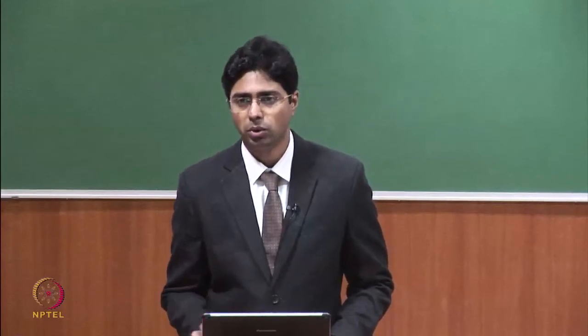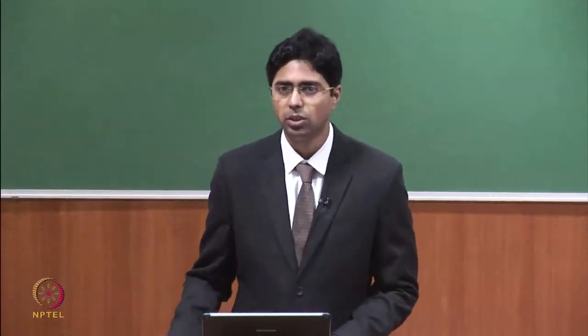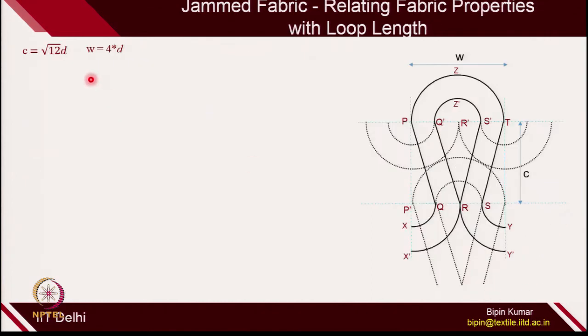If we assume that the fabric is jammed and loops are straight and circular arcs, then W and C are dependent on yarn diameter alone. There is no need to define which machine we are using. If you know just the yarn diameter, thread density is known to you. This is the beauty of this relation.